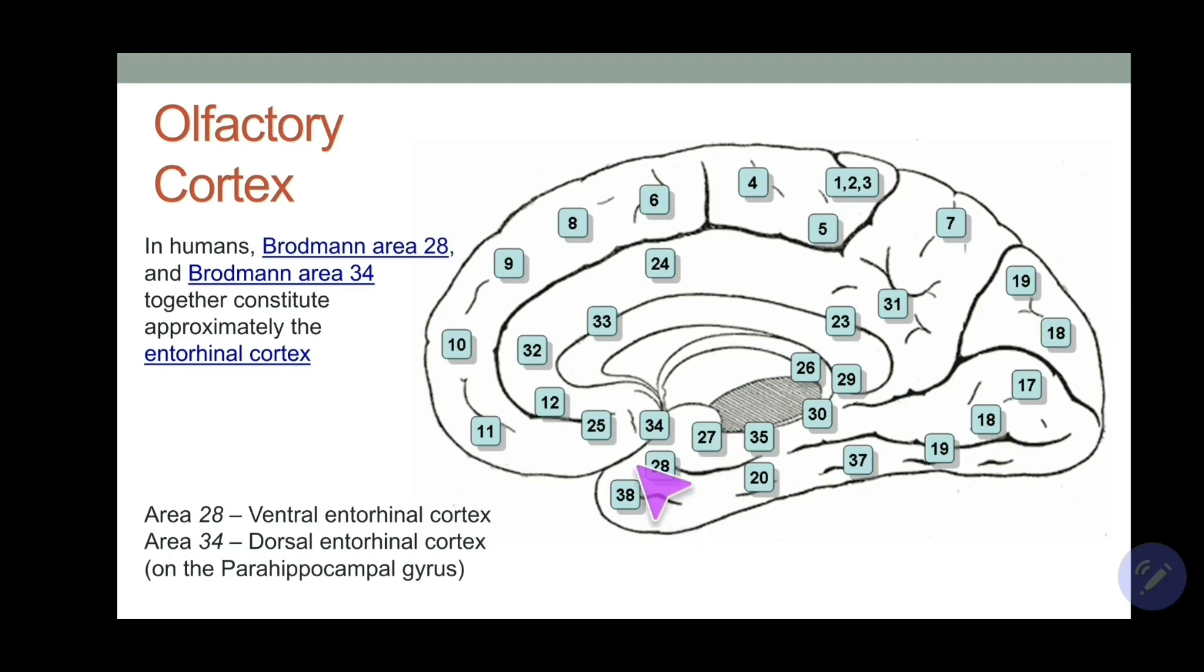So 28 and 34 together form the olfactory cortex. Now in case if sometime they ask you like in an MCQ form, giving the four choices, which is the secondary olfactory area, and 28 and 34 are separate choices, in that case I would suggest that 34 will be a better option, area number 34, because 28 is a subpart of area 34. So that was about the Brodmann's area of olfactory cortex.